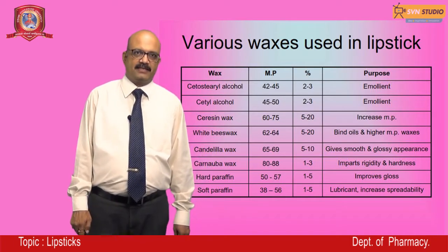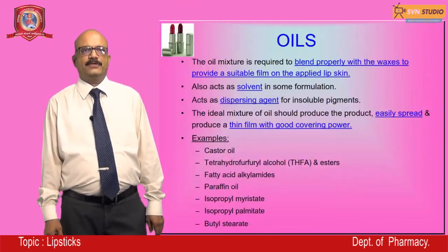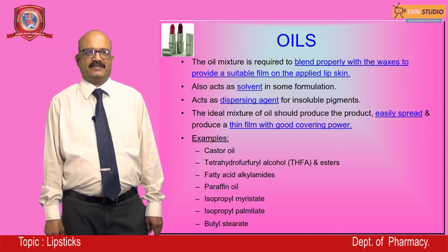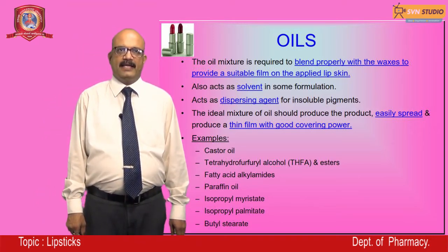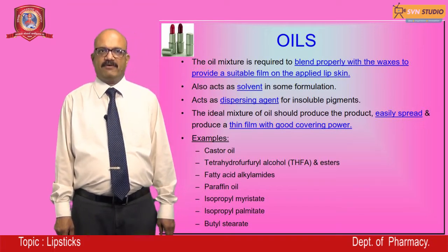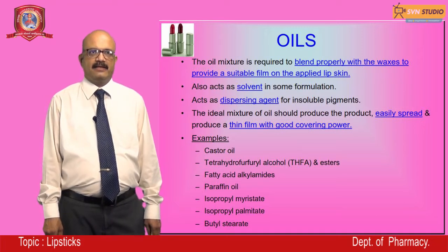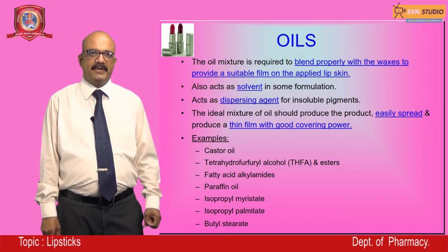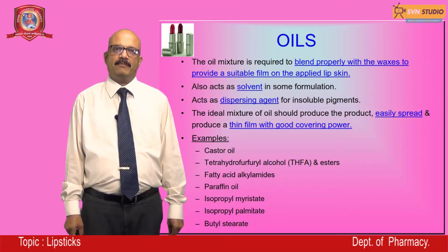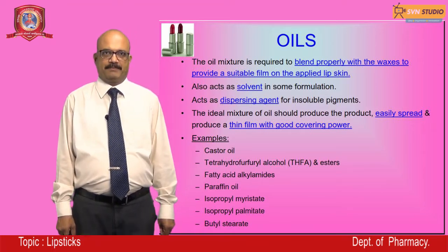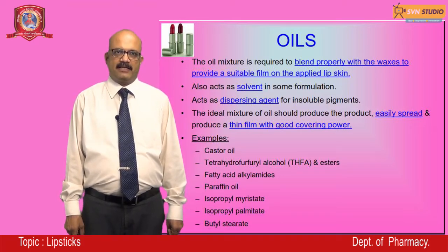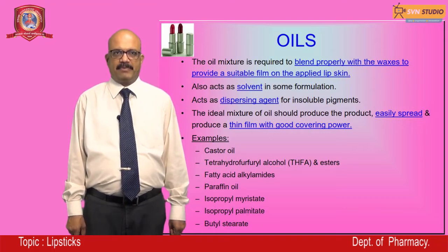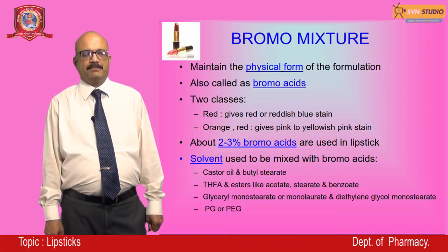The various oils used in lipsticks must blend properly with waxes to provide a suitable film on the lip skin. Oils also act as solvents in some formulations and as dispersing agents for insoluble pigments. The ideal oil mixture should produce a product that is easily spreadable and produces a thin film with good covering power. Oils used include castor oil, tetrahydrofurfuryl alcohol, fatty acid esters, alkylamides, paraffin oil, isopropyl myristate, isopropyl palmitate, and butyl stearate.